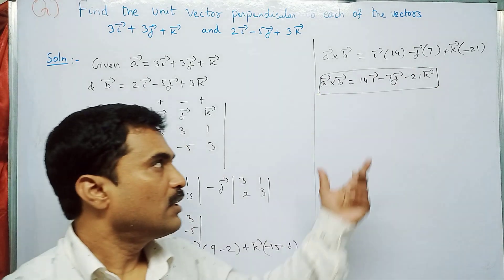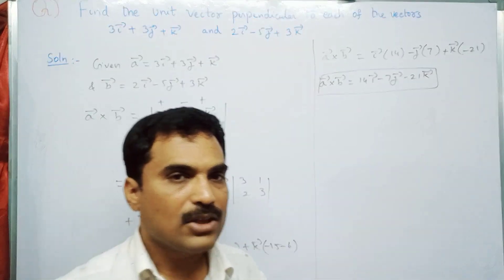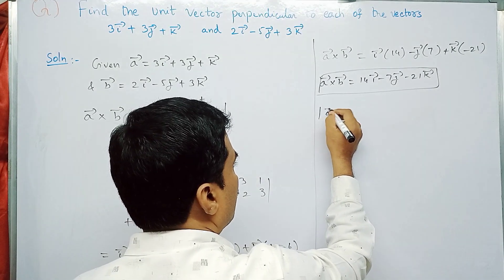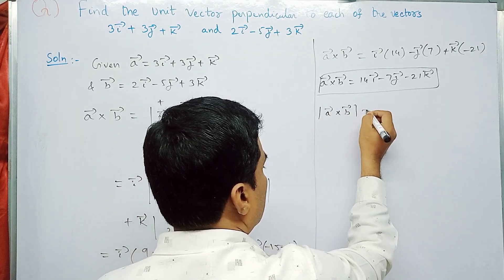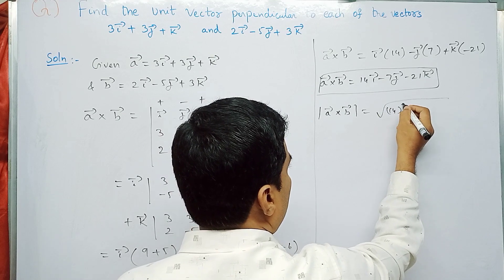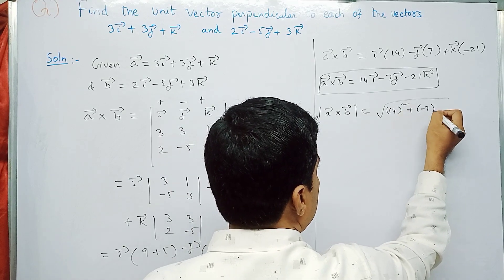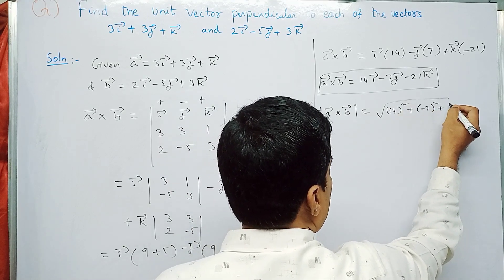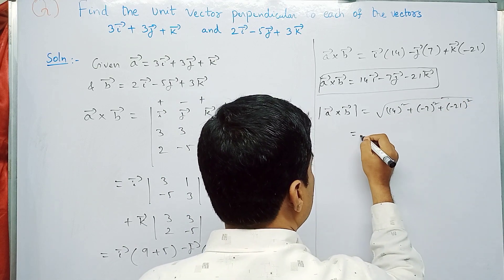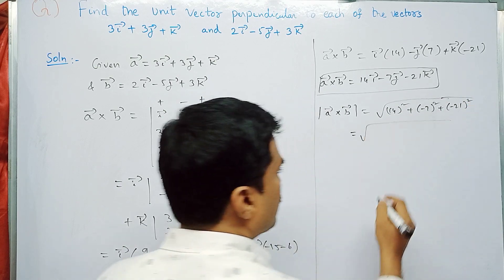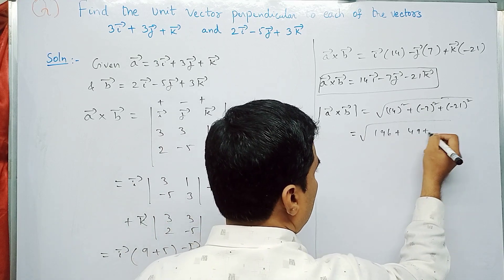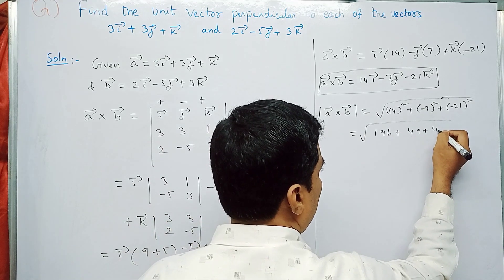Next, take the magnitude of a-bar cross b-bar. |a-bar cross b-bar| = √(14² + (-7)² + (-21)²) = √(196 + 49 + 441).